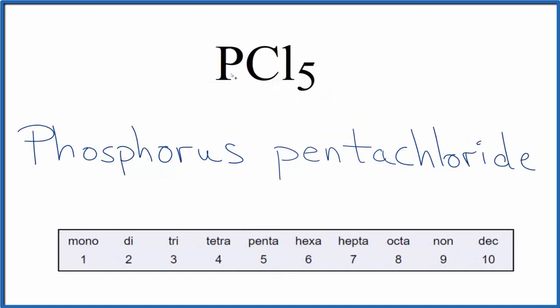And that makes the name for PCl₅, phosphorus pentachloride. And we have penta, that's because of those five chlorine atoms. Note that it's a lowercase p as well.